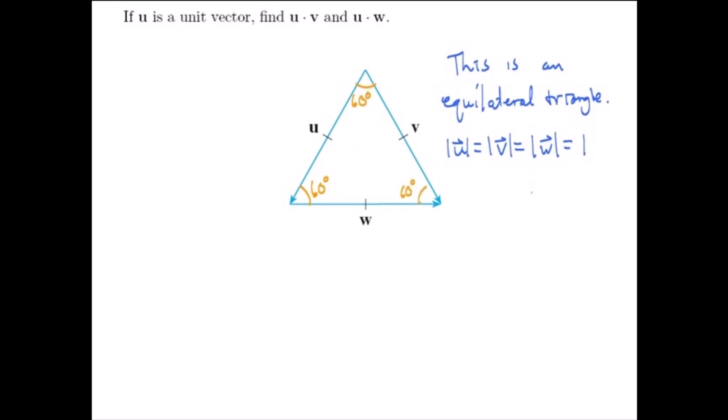Let's start with finding u·v. The definition of the dot product is that the dot product of two vectors equals the magnitude of the two vectors multiplied together times the cosine of the angle between them. The angle between u and v is 60 degrees, which is the angle formed when we start the vectors u and v at the same point, as you can see here.